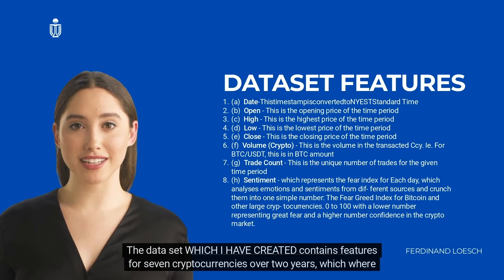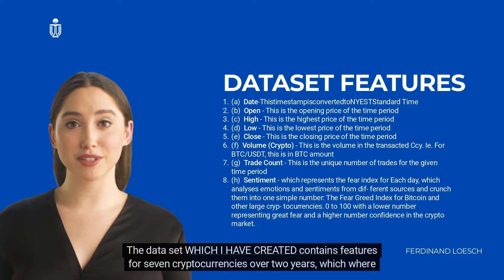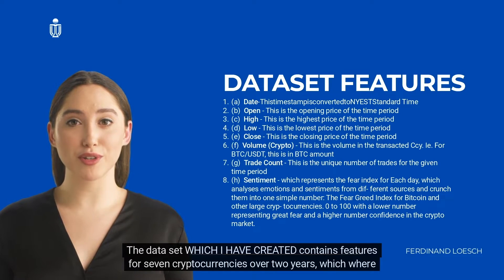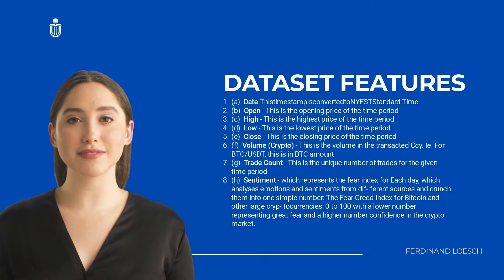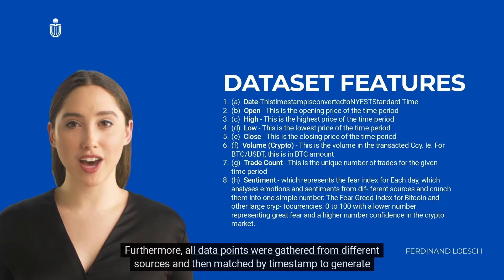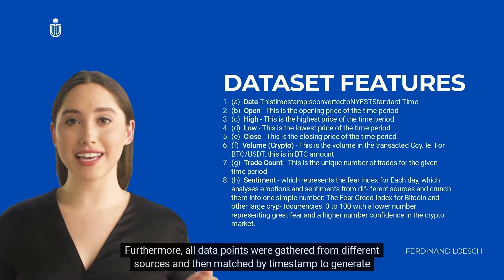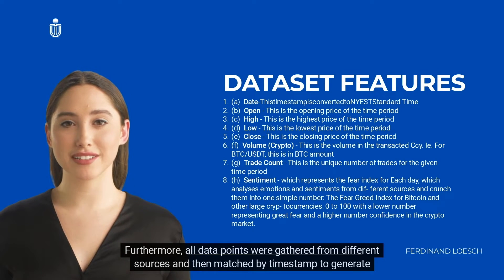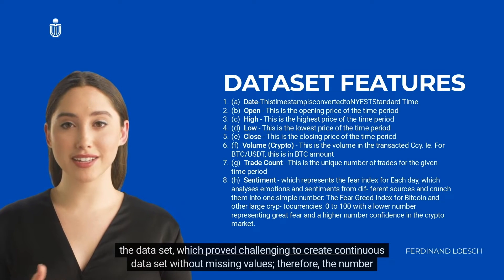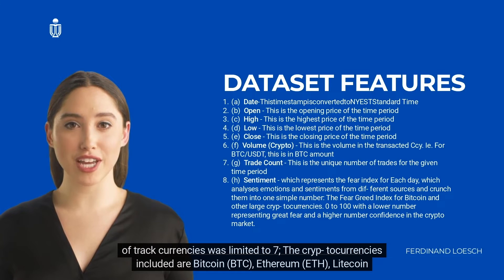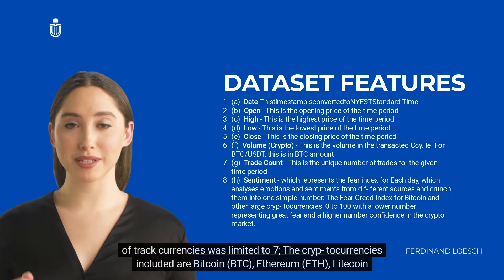The dataset I created contains features for seven cryptocurrencies over two years, recorded in hourly intervals, resulting in 15,000 rows. All data points were gathered from different sources and matched by timestamp. Generating a continuous dataset without missing values proved challenging, which is why the number of tracked currencies was limited to seven.